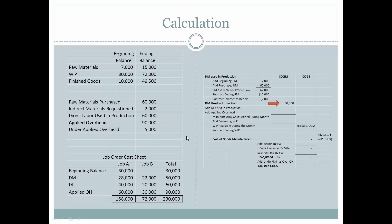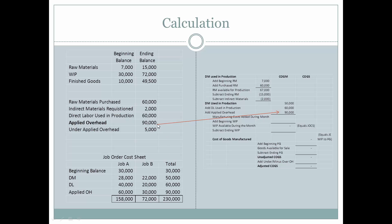Next, let's look at calculating cost of goods manufactured. Cost of goods manufactured includes items which were in WIP. We have the direct materials used in production, the direct labor used in production — both of which are additions to WIP during the period and agree to the job order cost sheet — and the amount of applied overhead that was applied to work in process, which we also find on the job order cost sheet. This gives us total manufacturing costs added during the period.